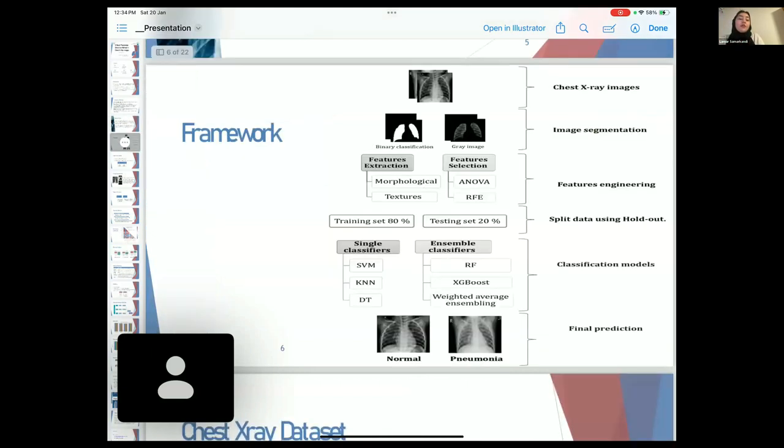Our framework works by taking the CRX image and segmenting the lungs into a binary classification and the gray image, extracting morphological and textured features.